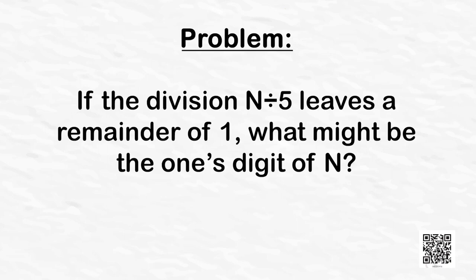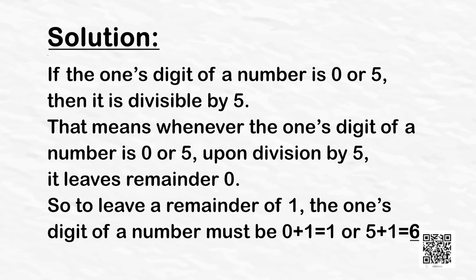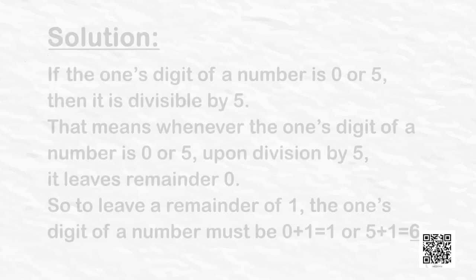Let's solve a problem. The problem says: if the division N ÷ 5 leaves a remainder of 1, what might be the ones digit of N? Observe that the ones digit when divided by 5 must leave remainder 1. By the test of divisibility by 5, if the ones digit is 0 or 5 it is divisible by 5, leaving remainder 0. So to leave a remainder of 1, the ones digit must be 0 + 1 = 1 or 5 + 1 = 6. Hence the ones digit of N is either 1 or 6.